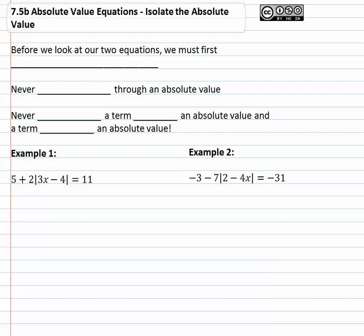In this video we're going to continue solving equations with absolute value to find the two solutions that x could be representing — what two numbers work in the equation. However, this time it's not just going to be an absolute value equals a number; there will be more stuff to the problem. We need to remember that before we look at our two equations, we must first isolate the absolute value.